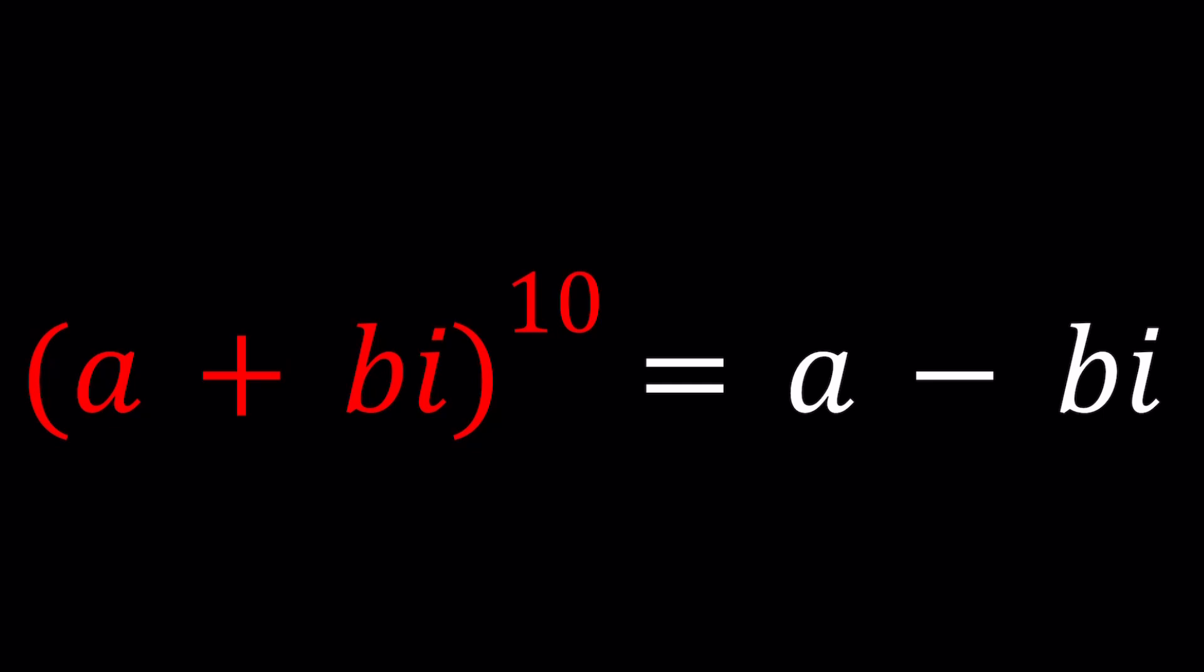We've done some similar problems before, but they were phrased a little differently. So if a plus bi, which is the name of this channel, is equal to z, then a minus bi will be z bar, which is the complex conjugate of z. So that's the first thing I want you to notice.